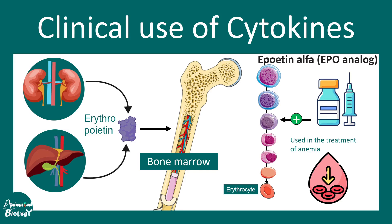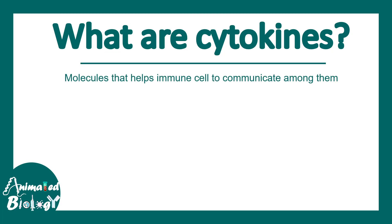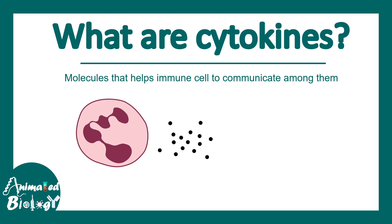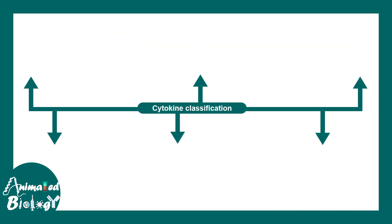In this video we'll talk about clinical usage of cytokines — it's a high yield video for USMLE Step 1. Cytokines are molecules that help immune cells communicate among themselves. They are chemical messengers for many signals. Many immune cells like neutrophils and macrophages secrete cytokines and they have a wide variety of roles in the context of the immune system. Right now we are going to focus on how cytokines can be targeted or used from a clinical perspective.